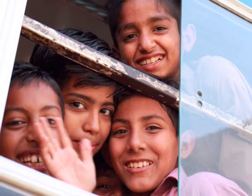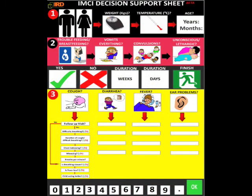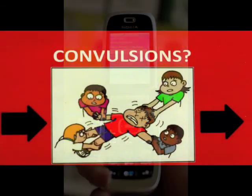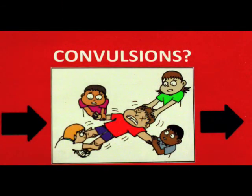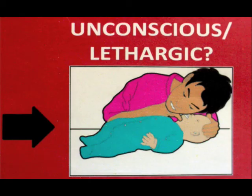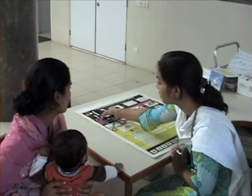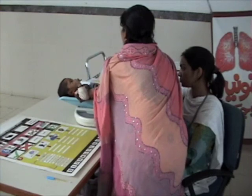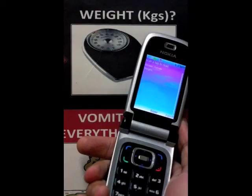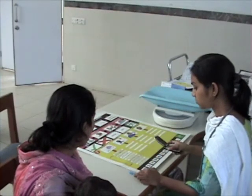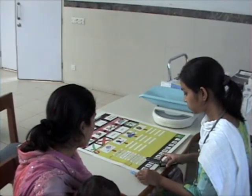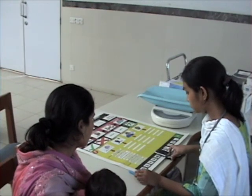In this demo, the interactive chart for childhood diseases has visual cues, each linked to an RFID tag. These will visually guide the health worker to ask specific questions of the patient, irrespective of language or literacy levels. Each image on the chart can now be scanned as an input value into the mobile phone.